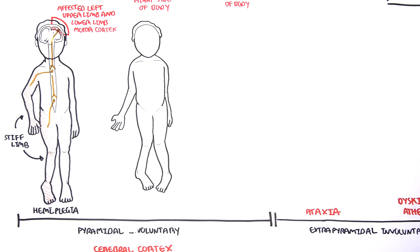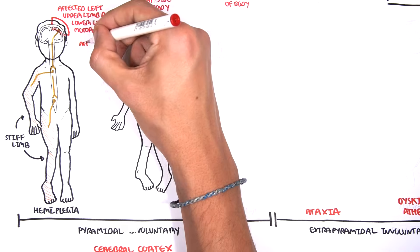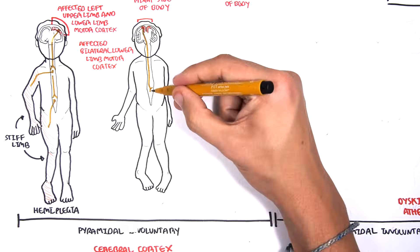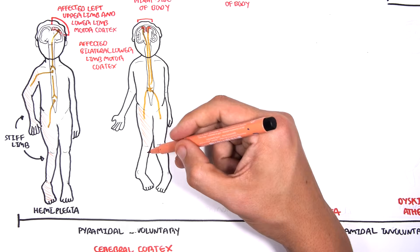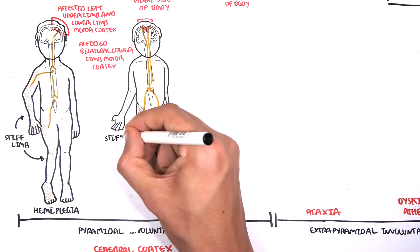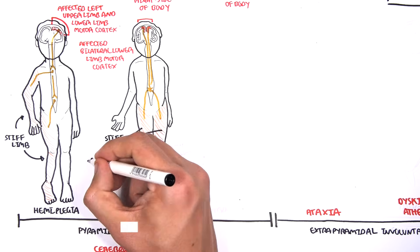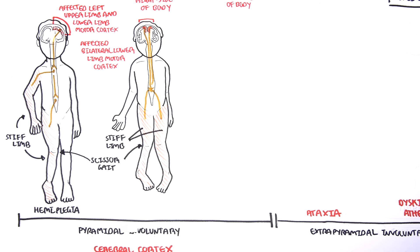In another example, the affected area is bilaterally the lower limbs of the motor cortex, meaning the lower limbs will be stiff with increased tone. When lower limb muscles are stiff with increased tone, different muscles work more than others, and a characteristic feature of spastic cerebral palsy is the scissor gait. Because the lower half of the body is affected, this is called paraplegia or diplegia.